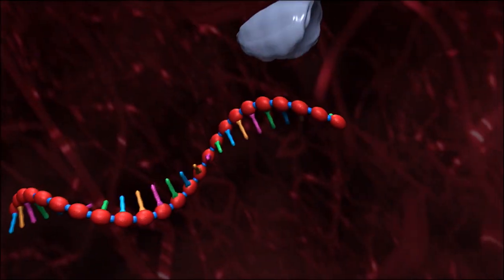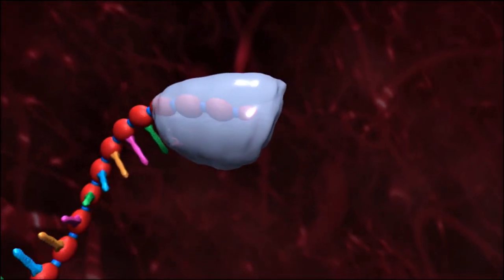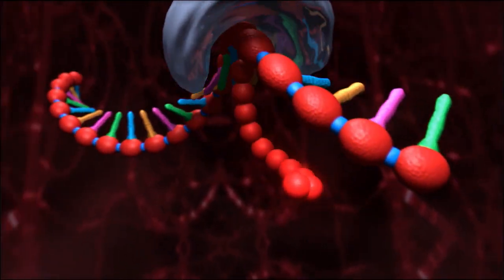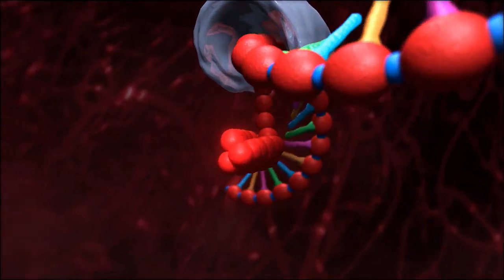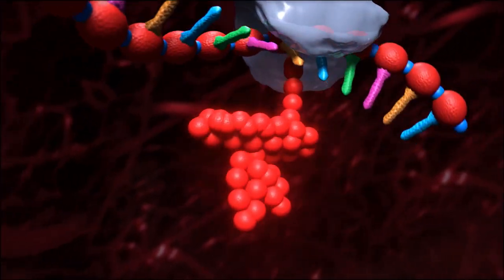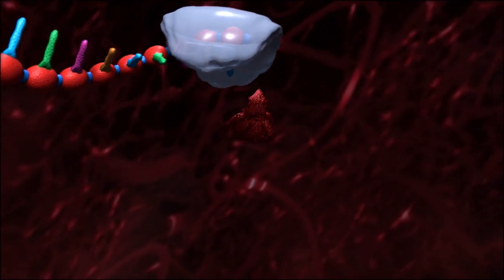Once the strands of messenger RNA enter our muscle cells, their genetic code is scanned, and piece by piece they're translated into spike protein, much like stringing a pearl necklace.